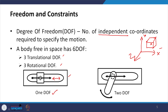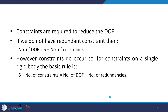Similarly, if we attach a link with a revolute joint on the piston that is also moving, that link has two degrees of freedom — one is translation and the other is rotation — and these degrees of freedom are independent.